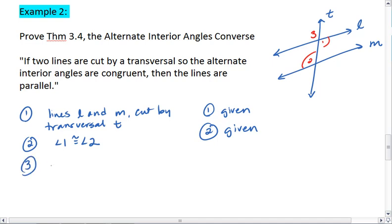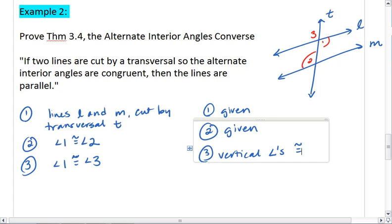We know that angle one is congruent to angle three already, and that is because vertical angles are congruent. You are welcome to use this shorthand if you want to, or you can actually write out the words angles and congruent. Either way works.